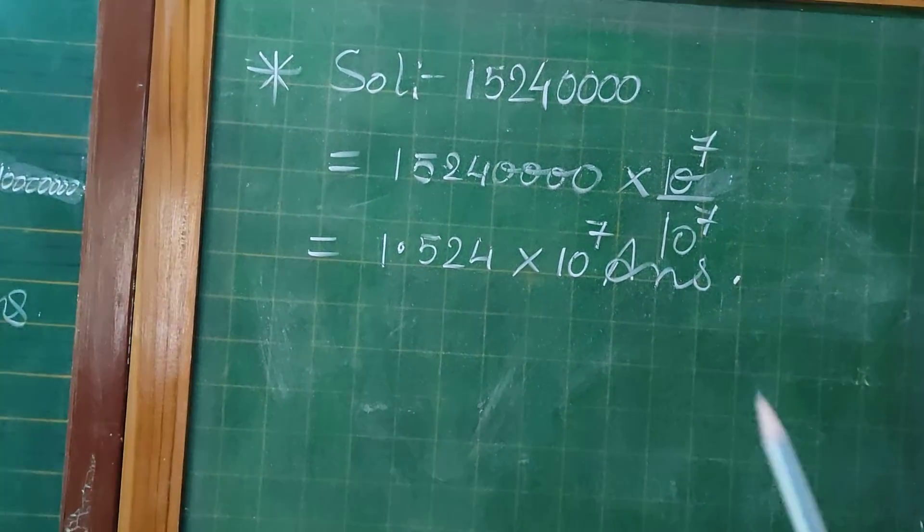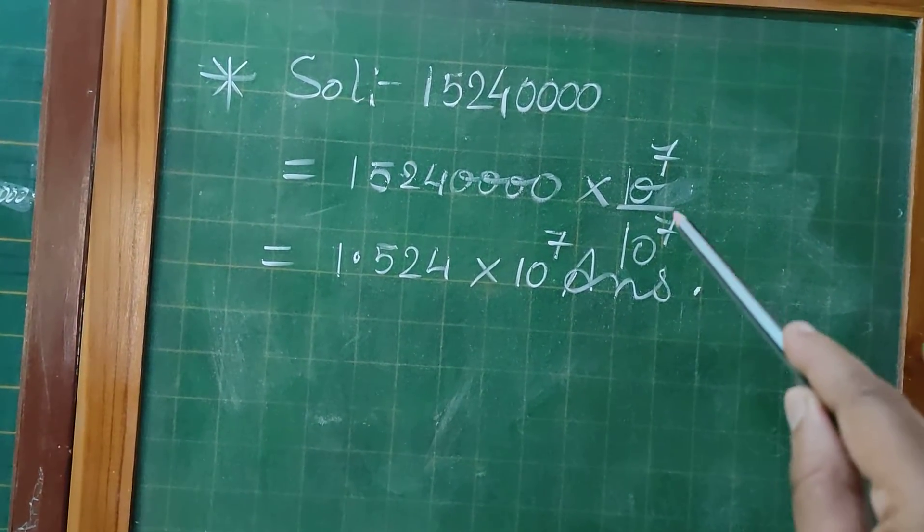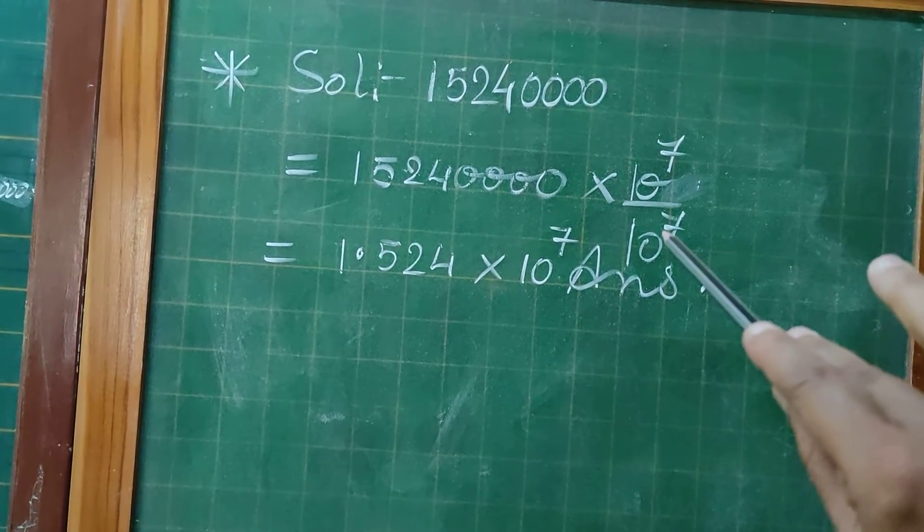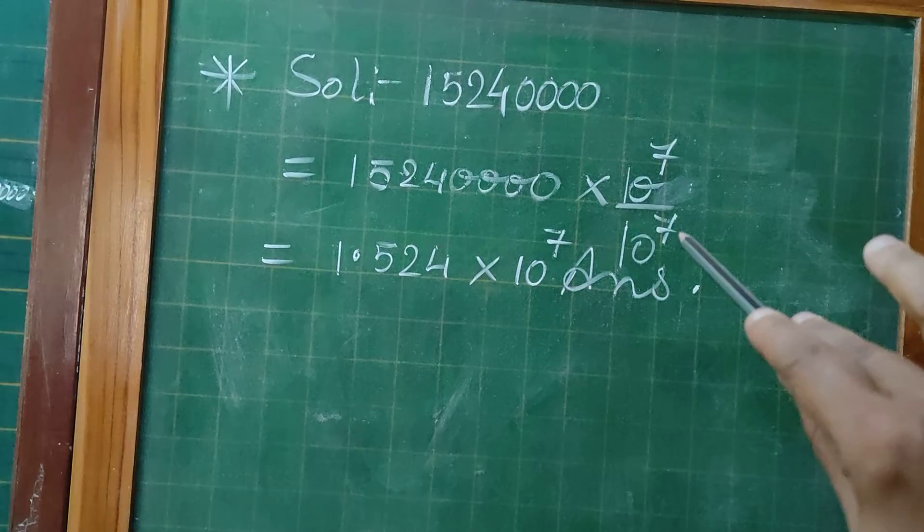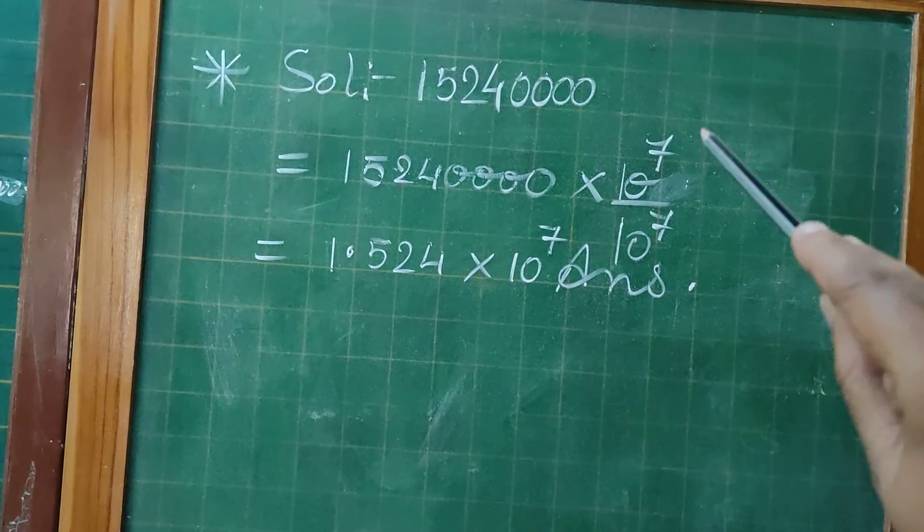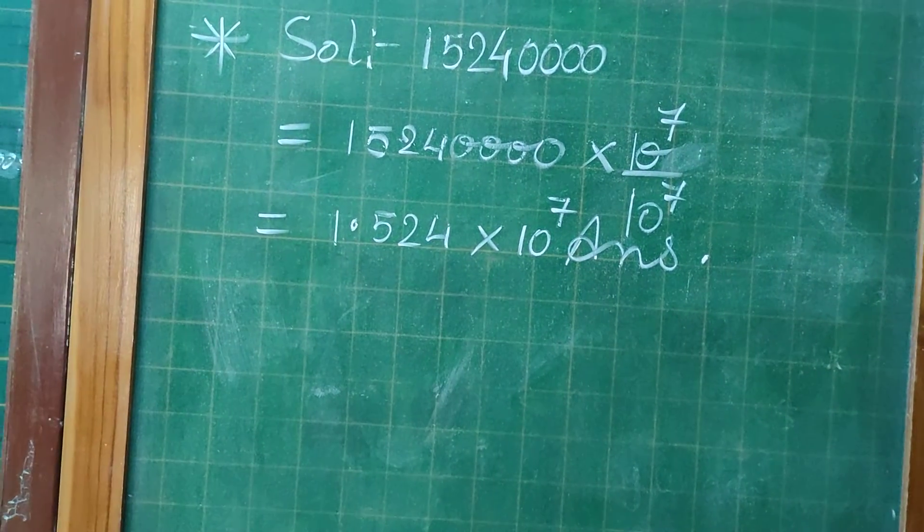So 10 to the power 7. Multiply by 10 to the power 7 upon 10 to the power 7. When we move left hand side, denominators zeros in the form of exponents we will use. So 1.524 times 10 to the power 7 will be the answer.